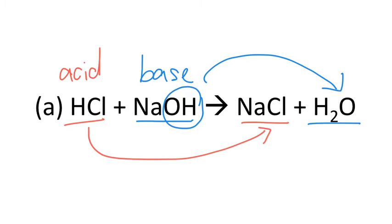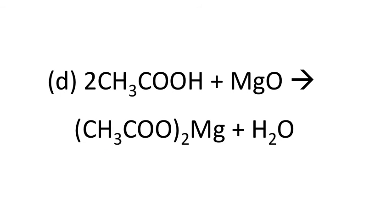Now, let's look at the other example, part D. For most of you, you might not be able to identify this. This is our ethanoic acid. Our ethanoic acid can be broken down into ethanoate ion and H+.